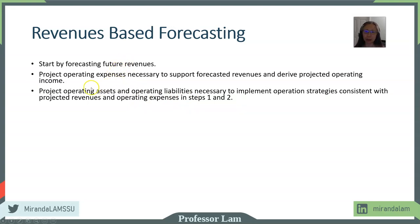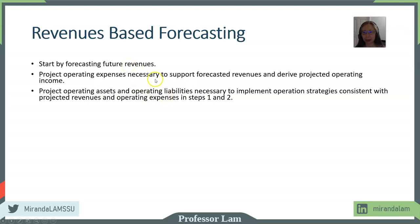For example, if you project a certain level of revenue, you may have to obtain inventory and create accounts receivable to support the sales revenue — those are your operating assets. Similarly, inventory will likely be supported by accounts payable as an operating liability. All those things should be linked together.